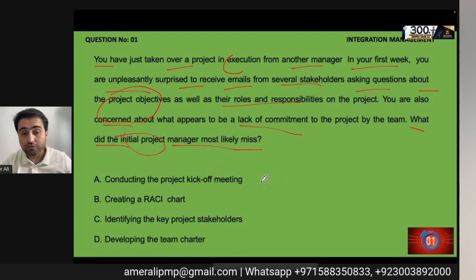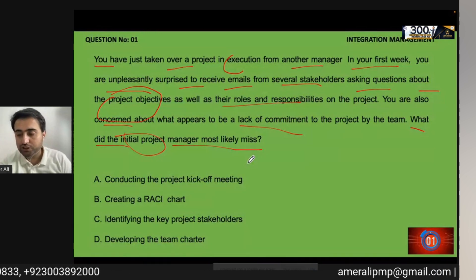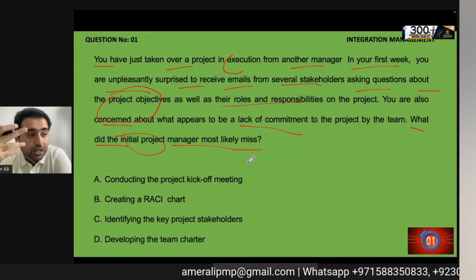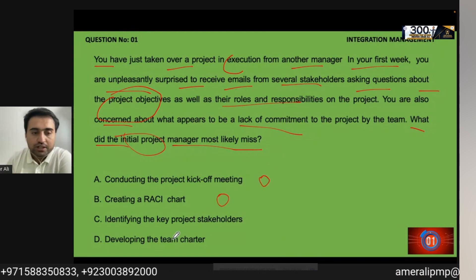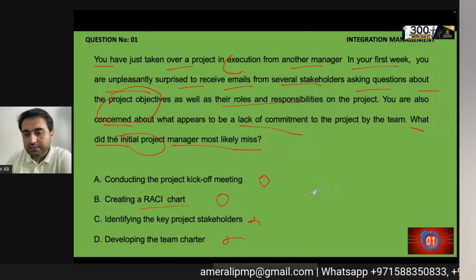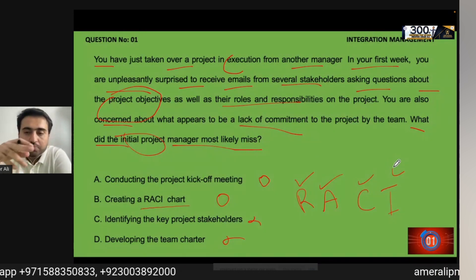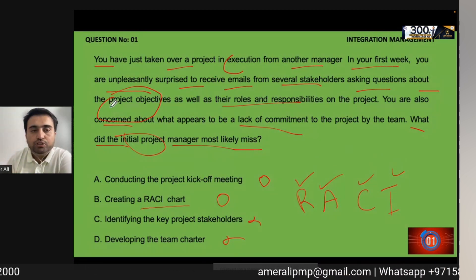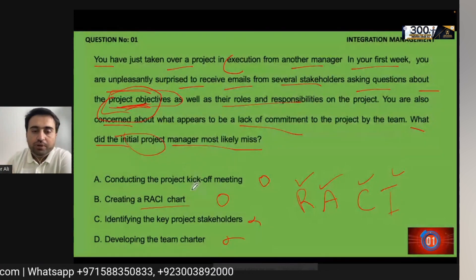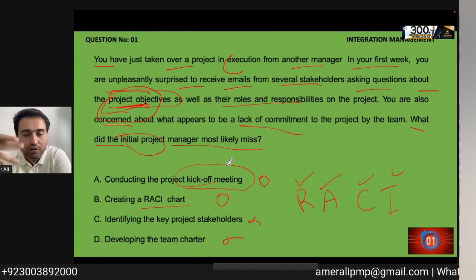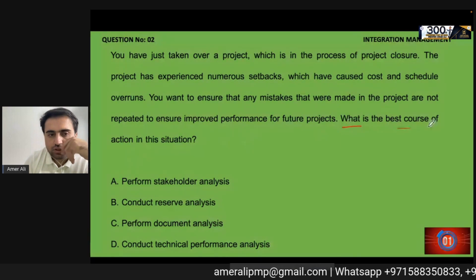The answer is conducting the kickoff meeting. The kickoff meeting is the time when the project plan is ready, the team comes together, and you share with everyone their responsibilities. A RACI matrix could also be an answer — RACI stands for Responsible, Accountable, Consult, and Inform. But the key keyword here is that stakeholders are not clear about the project objective. The kickoff meeting clarifies both the project objectives and key responsibilities for every individual.